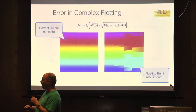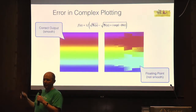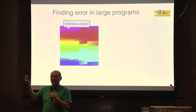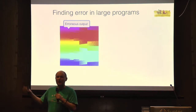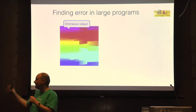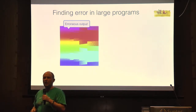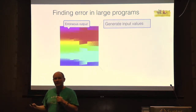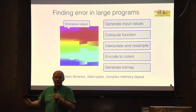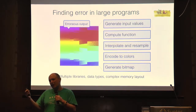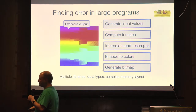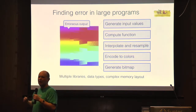So let's go back to our plotter example. If I'm a user, I'm just going to see this bad output, and I need to figure out what to change in my C program to get the smooth output I actually want. There are a lot of places error could occur — in the way I'm getting inputs, the way I'm sampling, in the actual computation of the function, and on and on.